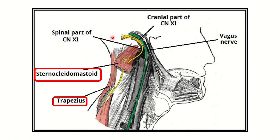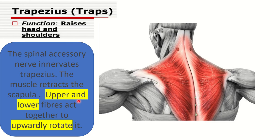The spinal accessory nerve is the 11th cranial nerve. From the skull base, it enters into the neck and supplies two important muscles: one is the sternocleidomastoid, and the second is the trapezius muscle. The trapezius muscle causes raising of the head and shoulder, and the muscle also retracts the scapula.